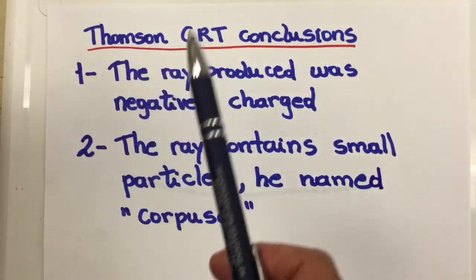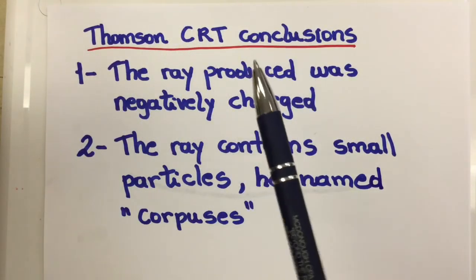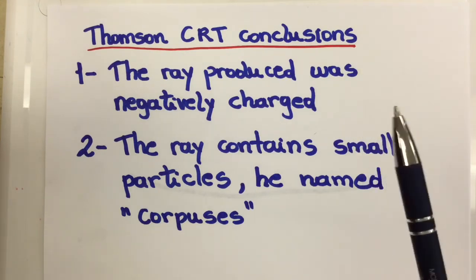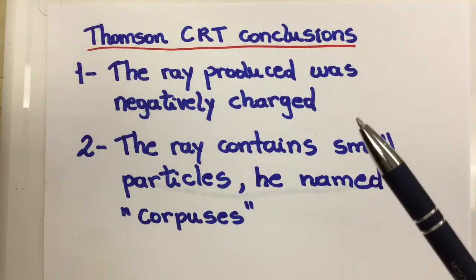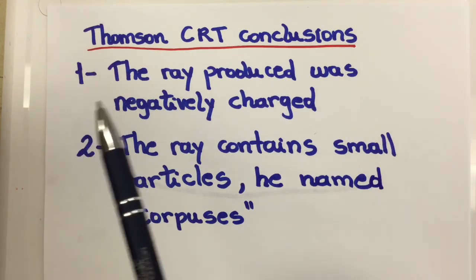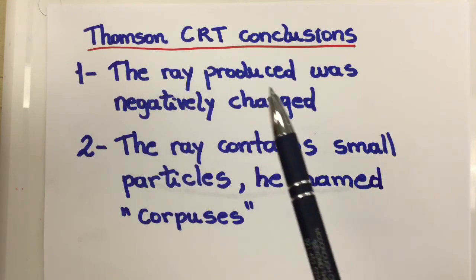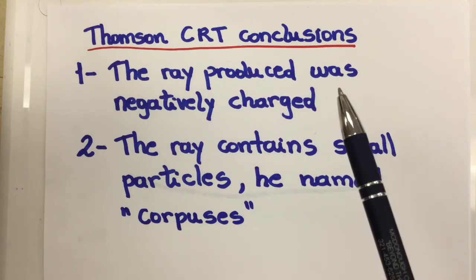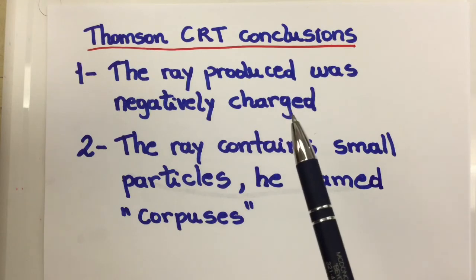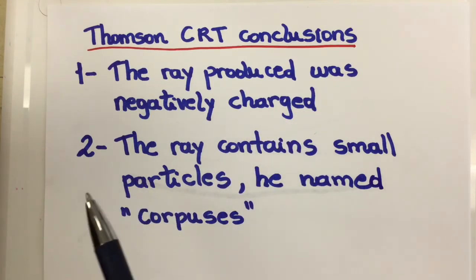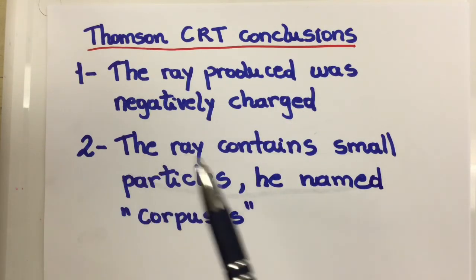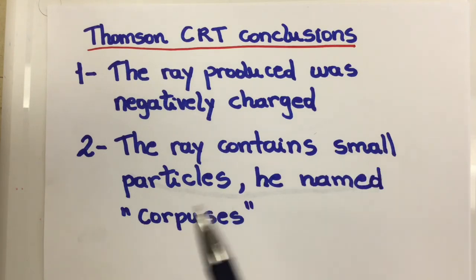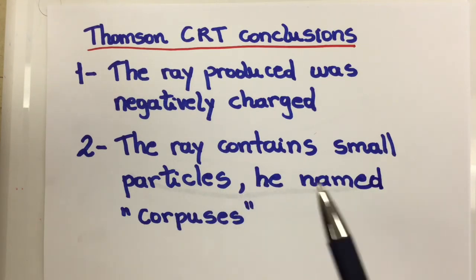Thomson cathode ray tube experiment conclusions. He concluded the ray produced in this experiment was negatively charged. And also he concluded the ray contains small particles and he named them corpuscles.